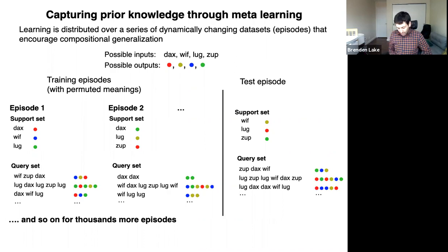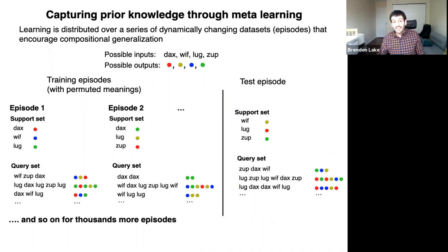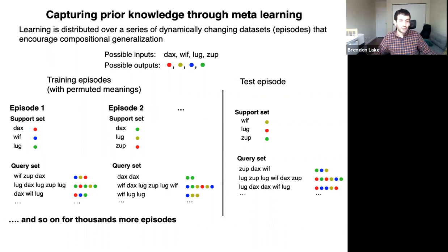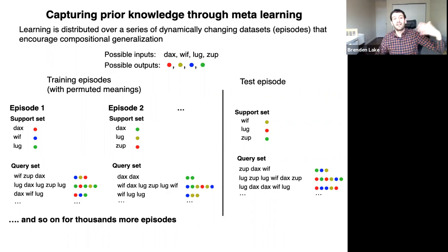To capture this type of prior knowledge through meta-learning: learning doesn't happen on one static dataset. Instead, learning is distributed over a sequence of dynamically changing datasets called episodes that encourage compositional generalization. Each episode gives different primitives with different meanings — DAX might be red in one episode, green in another. The network encodes support items and has to make generalizations to the query set. After enough training episodes with permuted meanings, we give it a test episode with completely new mappings and see how it performs.